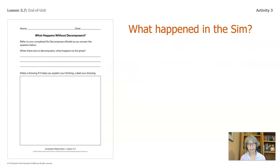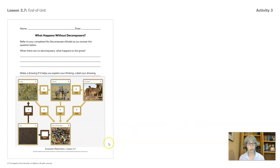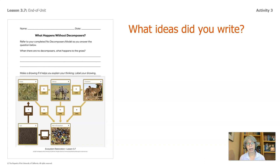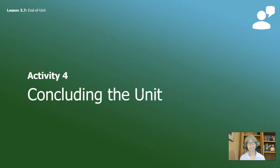What happened in the simulation? Here's a sample. With no soil nutrients or soil matter coming from the beetles, there is less available for the grass. If the grass isn't thriving, then there's less food matter for the zebras. If the zebras are not thriving, then there's less food matter for the beetles and for the cheetahs. Everything in the food web is impacted. Make sure you show your teacher and classmates what you drew and what you learned from the simulation or from the drag-and-drop handout in your packet. The plants don't get nutrients, so the grass doesn't have what it needs to grow and thrive — the grass will become unhealthy. That's what happens when there are no decomposers.